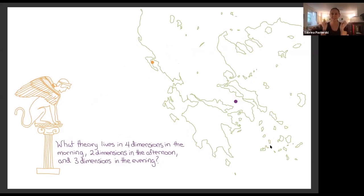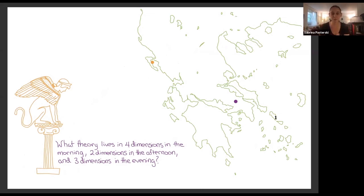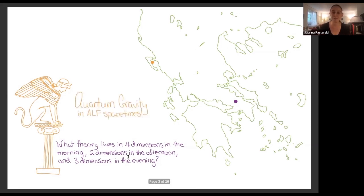I drew a pyramid and a sphinx, but I should remind you that we are in Greece, so it's a slightly different mythology. Our subfield is basically some variant of the riddle of the sphinx: we're studying quantum gravity in four dimensions, but we have a 2D description, and depending on whether you look at null infinity or the behavior in delta, it makes it look like it lives in three dimensions. So we know the answer to the riddle of the sphinx.